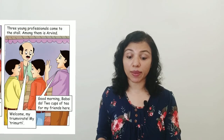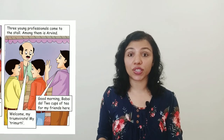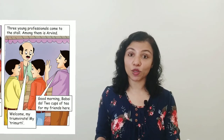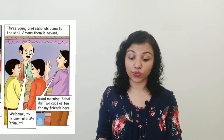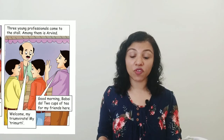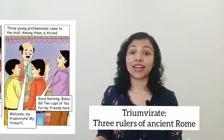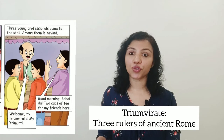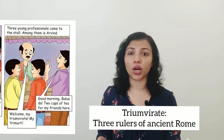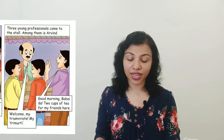After that, three young professionals come to the stall. Among them is Arvind. These three young people walk into the tea stall to drink some tea. As you can see in the picture, they are well-dressed and appear well-to-do. The tea stall owner welcomes them warmly: 'Welcome by triumvirate — my trimurti!' Triumvirate means a set of three people, like a trinity — three people who are friends or always together. The Hindi word for that is trimurti. Good morning Babaida, two cups of tea for my friends.